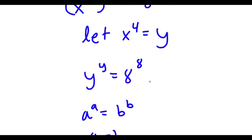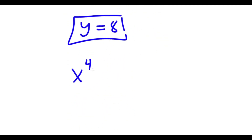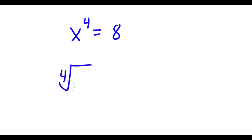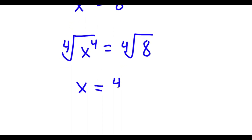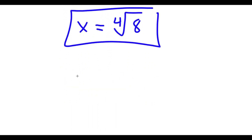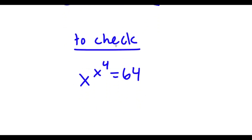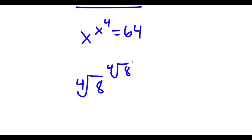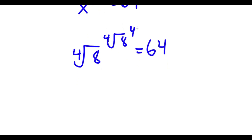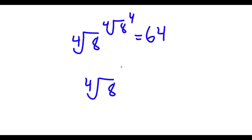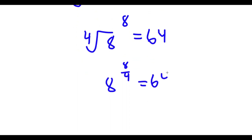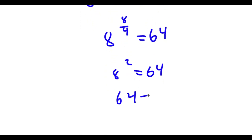Remember we let x to the power of 4 equal y, so if x to the power of 4 equals y and y equals 8, then x to the power of 4 is equal to 8. To solve this I'm going to take the 4th root on both sides. The 4th root of x to the power of 4 is x, so x is equal to the 4th root of 8. To check: the 4th root of 8 to the power of 4 is 8, so I have 4th root of 8 to the power of 8, which equals 8 to the power of 8 over 4, meaning 8 to the power of 2 equals 64. And 64 equals 64 — so this is correct.